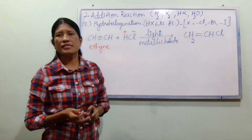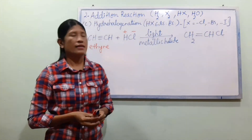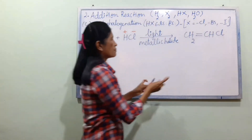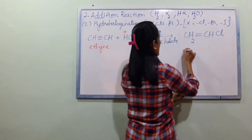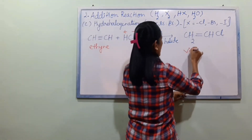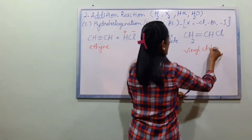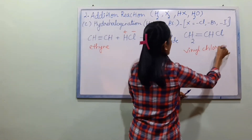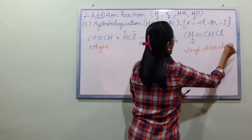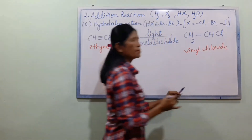HBr addition: we have CH2=CHCl, which is the same as vinyl chloride.